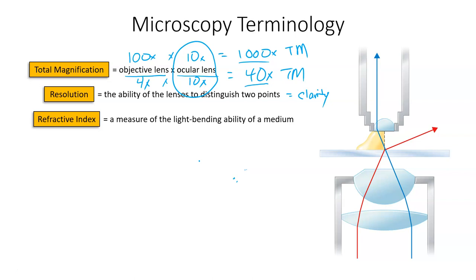Refractive index is the measure of the light bending ability of a medium. As demonstrated in this image, when you send light from the illuminator up through the condenser lenses — because these lenses are not flat — it's going to cause the light to bend. Light bends when it goes through water, through glass, through lenses, through the slide, and through the specimen or medium you're looking at. Light bends when it travels through any medium.